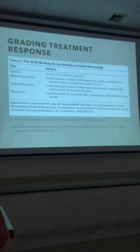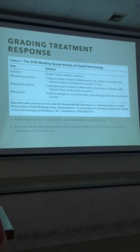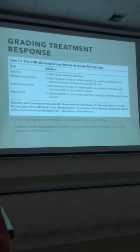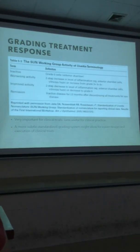Worsening activity and improved activity in the SUN Working Group criteria involve a two-step increase or decrease in inflammation. So say you go from zero cell to two-plus cell — that's worsening according to the SUN Working Group. In your clinical practice, you're not usually going to wait until someone goes from zero to one-plus and then two-plus before you decide they need more therapy.